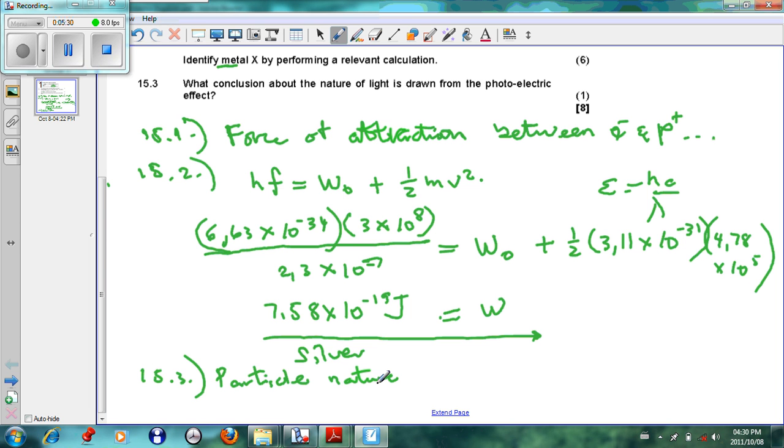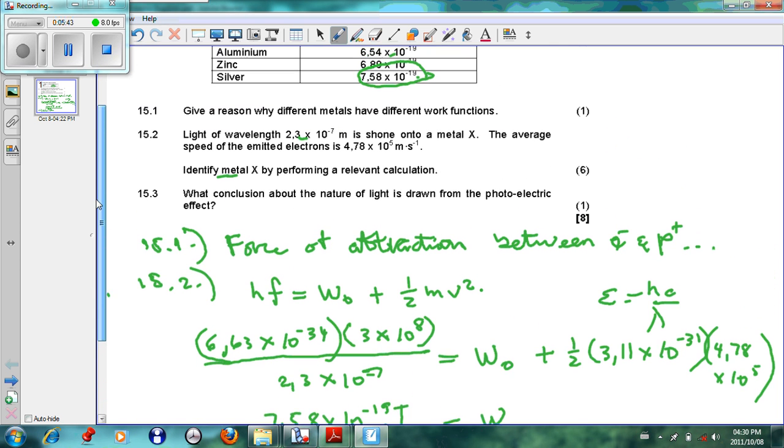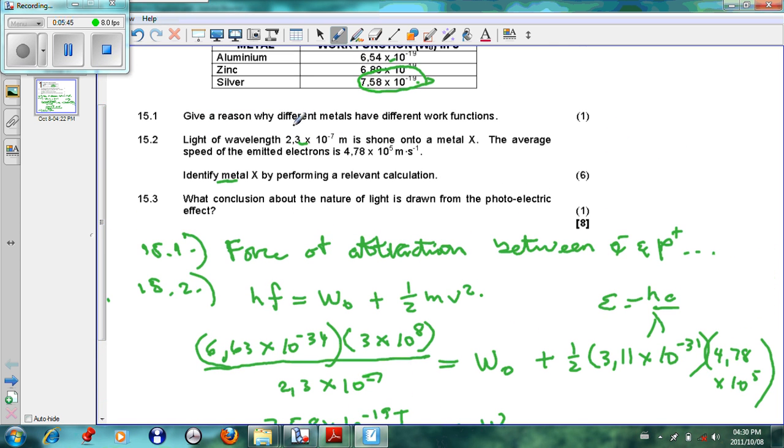This is an approach to a typical matrix sum. Make sure that you learn your calculation, but don't forget that this question also has theory: give a reason why the different metals have different work functions, and what conclusion can be drawn. So out of the eight marks, there's two marks related to theory. Don't forget to learn your theory. Thanks for your time.